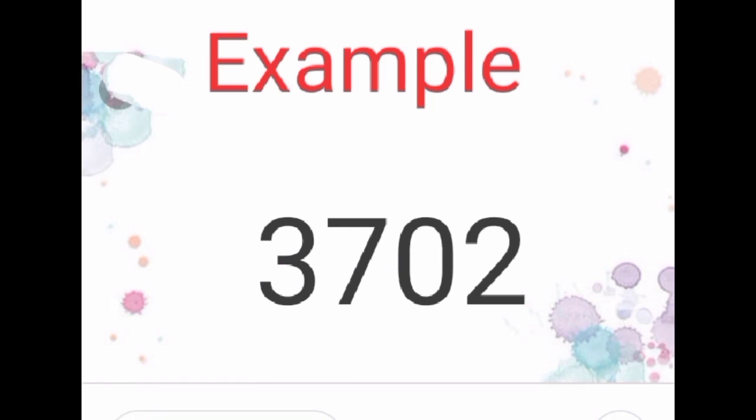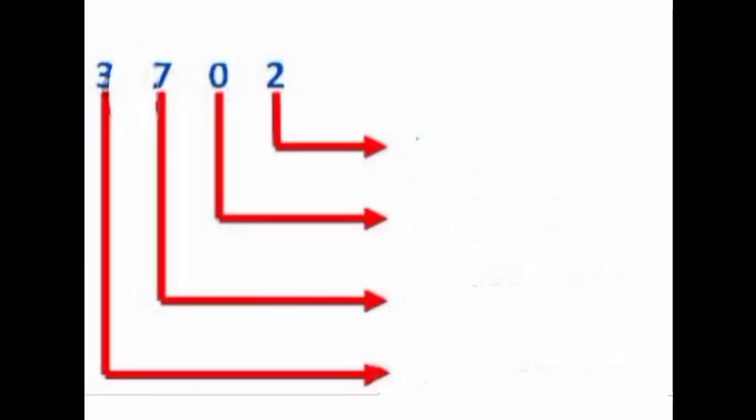Let us see one more example. First, we have to draw a place value chart. To find the place value of 2 — 2 is in the ones place. So, 2 into 1 is equal to 2. Therefore, the place value of 2 is 2.